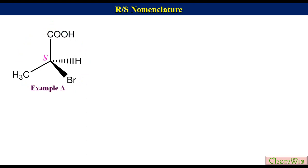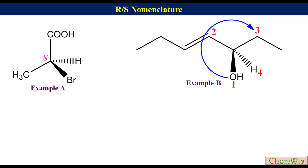Example B. In this formula, at the chiral center, the hatched wedge with the hydrogen is missing. So add the missing hatched wedge with hydrogen. Determine the priorities and label the groups as 1, 2, 3, and 4. Draw an arrow from 1 to 3 via 2. Since the direction of the arrow is clockwise, the configuration will be R.